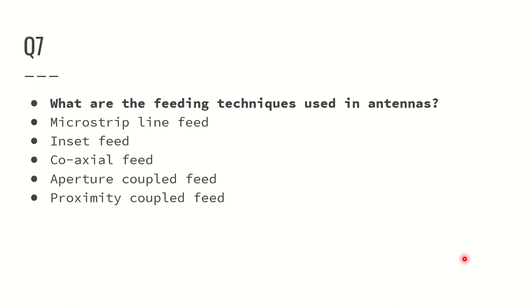What are the feeding techniques used in antennas? The most commonly used feeding techniques are: microstrip line feed, insert feed, coaxial feed, aperture couple feed, and proximity couple feed.